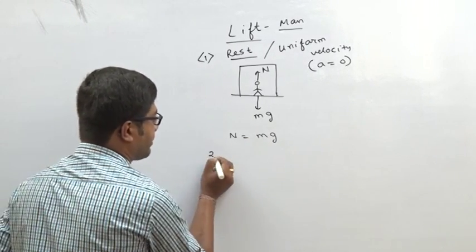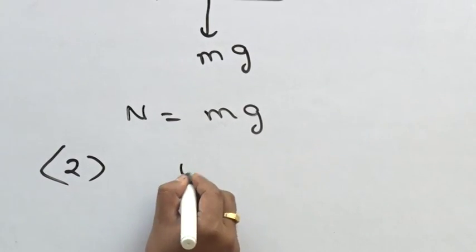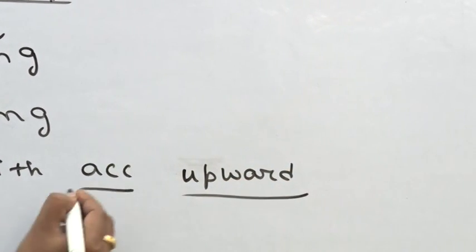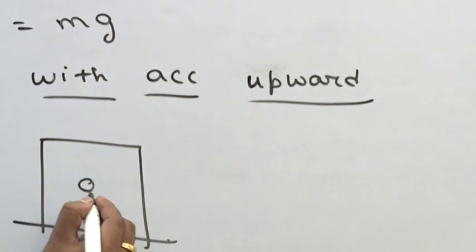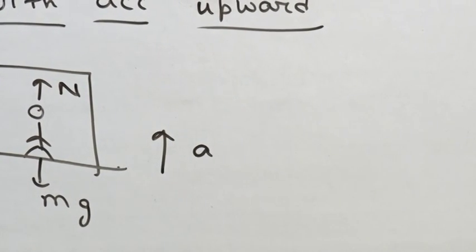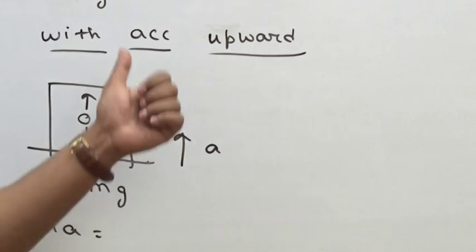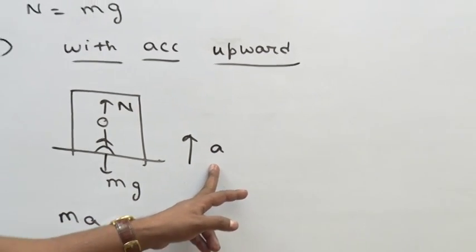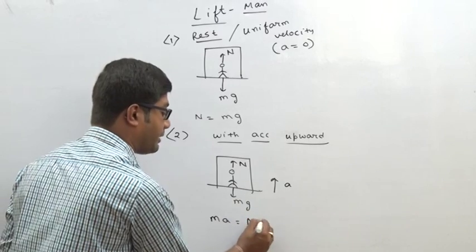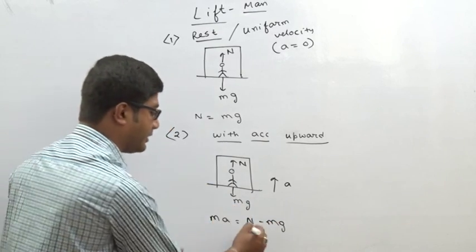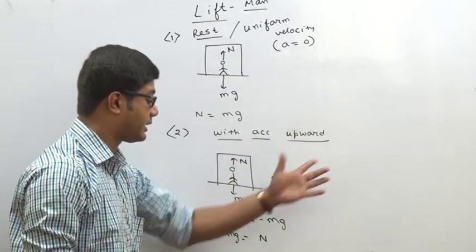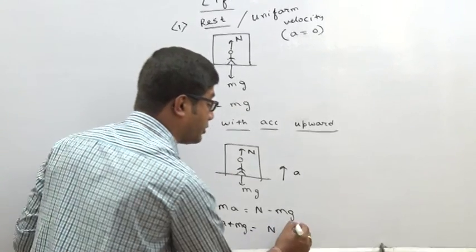Case 2: Lift is moving upward with acceleration. A man is inside. Downward is weight mg, upward is normal reaction N, and acceleration is upward. Net force is upward, so upward force is greater than downward force: N minus mg = ma. Therefore N equals ma plus mg. So apparent weight increases when the lift moves upward with acceleration.